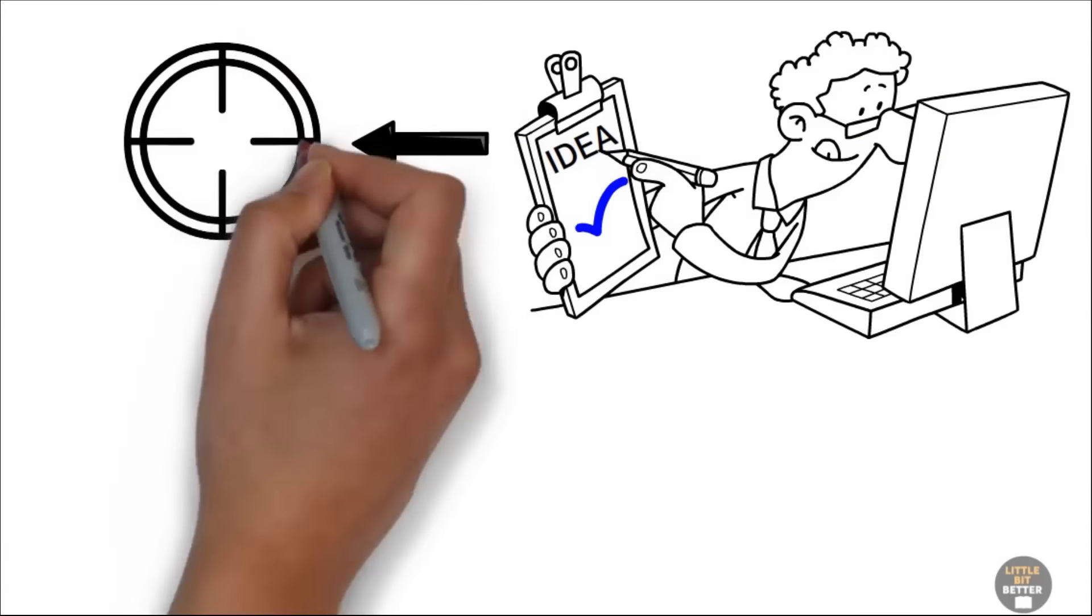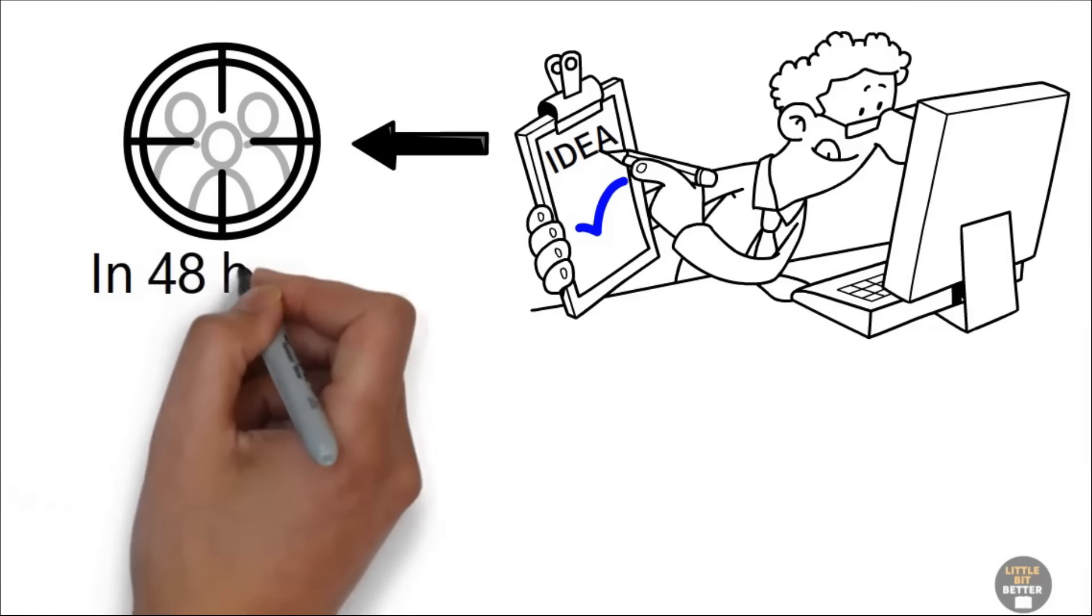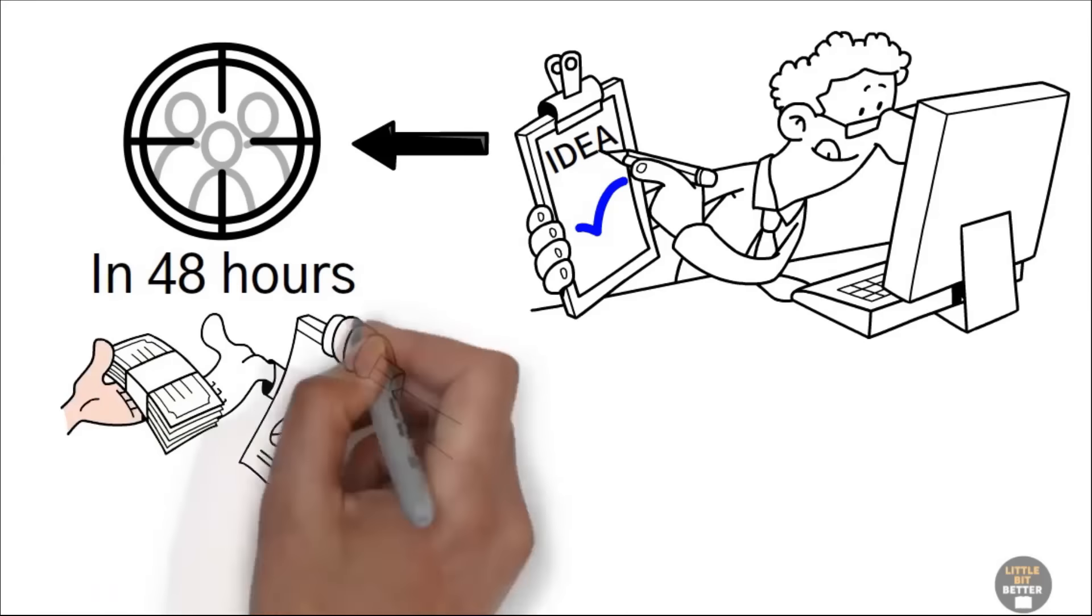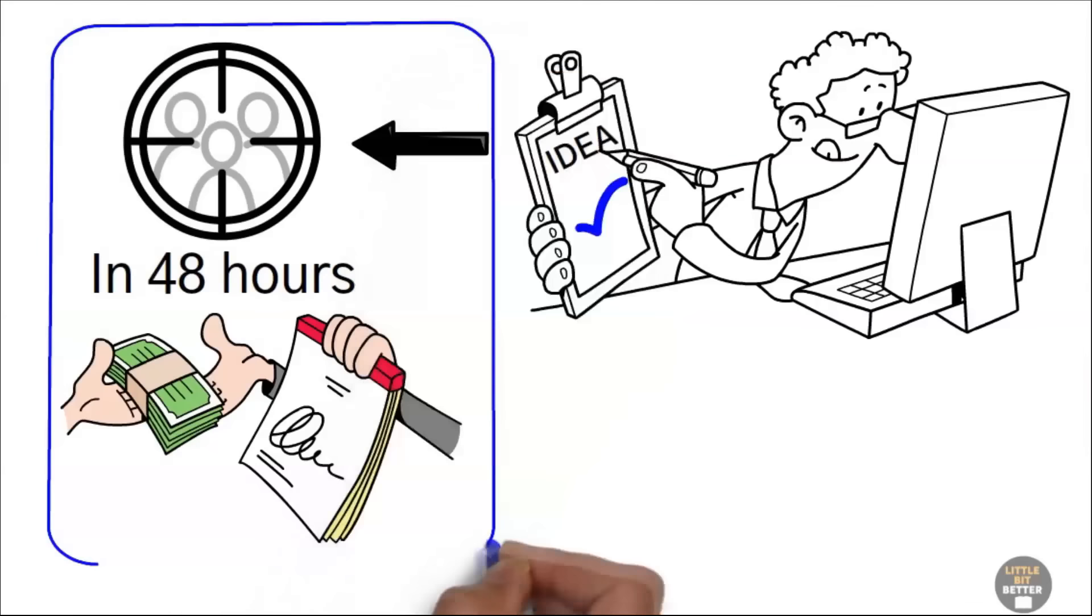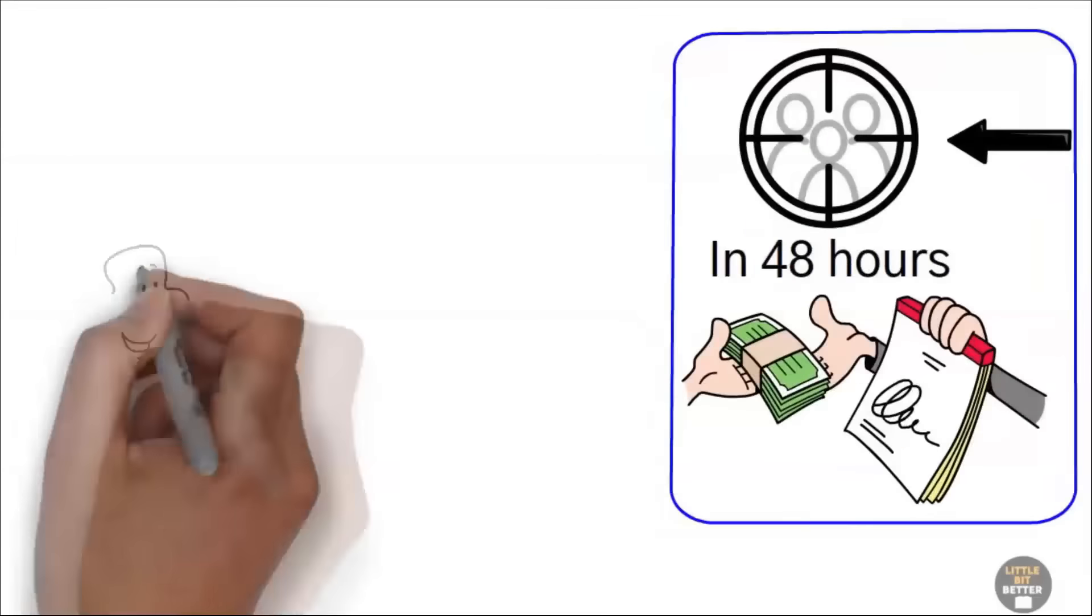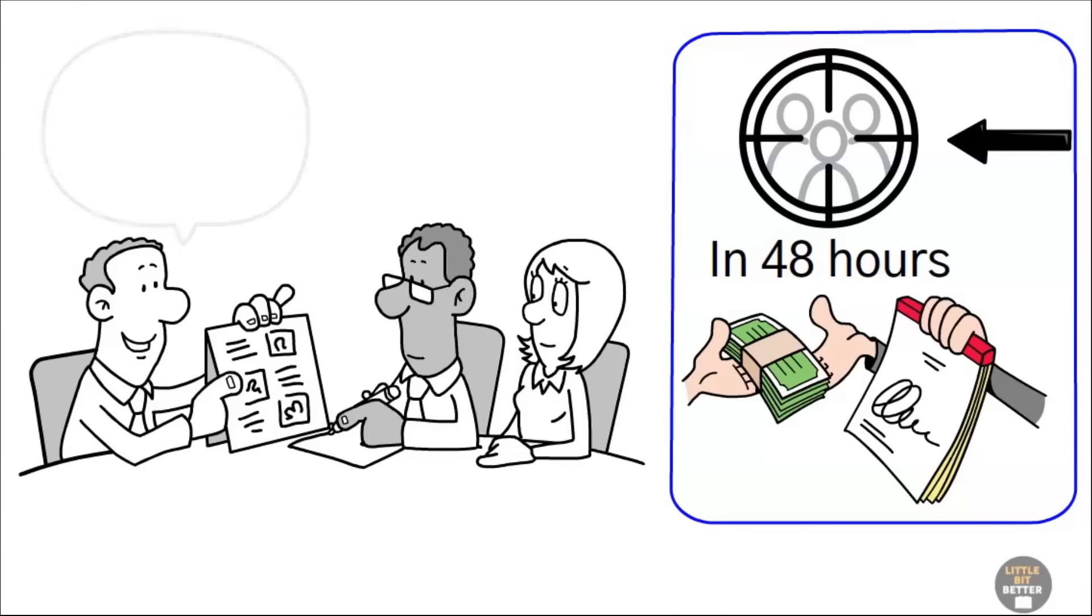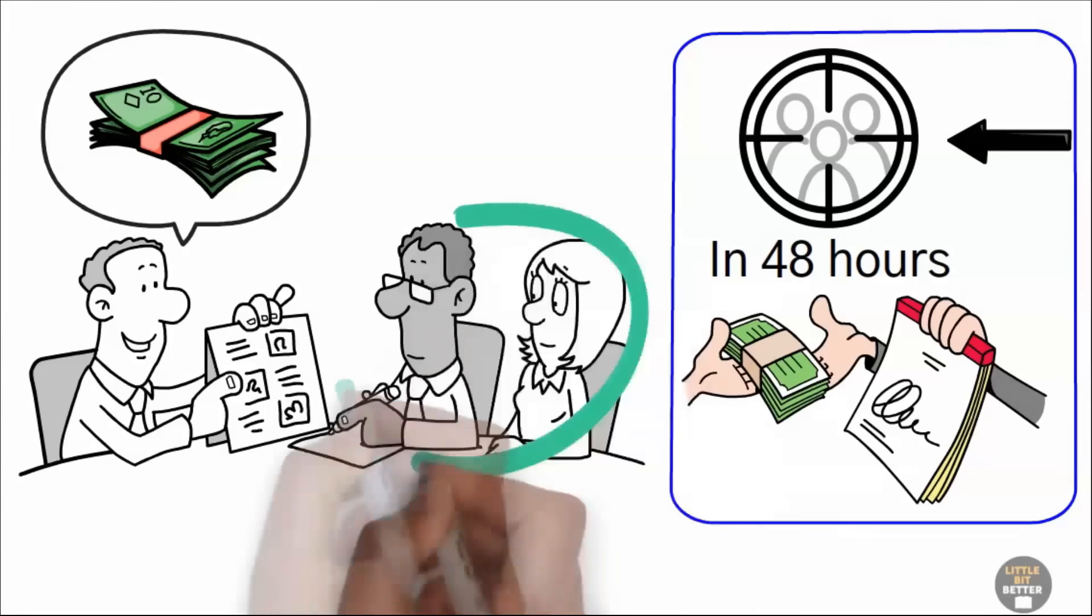Here is how you validate your idea. Find three customers in 48 hours who will give you money for your product or service. That's it. The easiest way to validate the market for an idea is to talk to someone in person. Tell them your idea, ask for money, and see how they react.